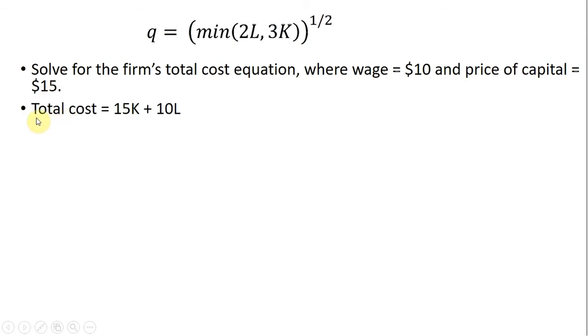So formulating our general total cost equation, we have the price of capital times units of capital, plus the price of labor times units of labor.